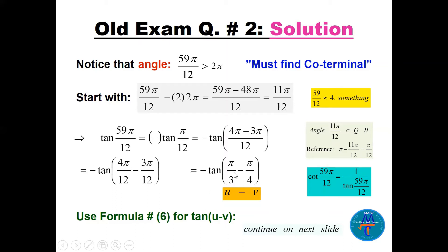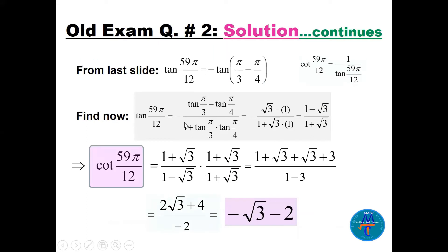Using formula 6 from the lecture — the tan(u − v) formula — we have the minus from quadrant two outside. Applying tan(u) − tan(v) over 1 + tan(u)·tan(v): tan(π/3) = √3, tan(π/4) = 1. The numerator becomes √3 − 1 and the denominator 1 + √3. Including the outside minus gives (1 − √3)/(1 + √3).